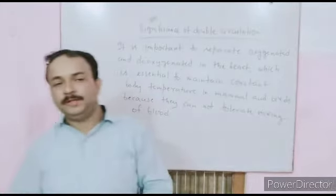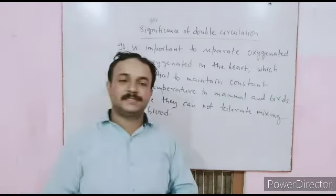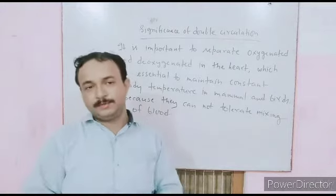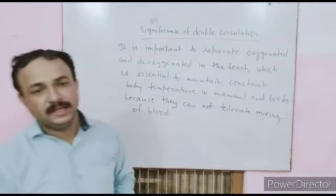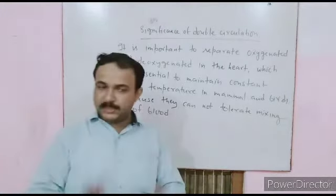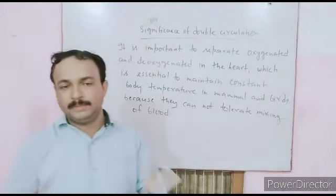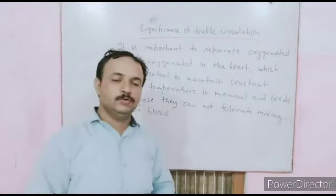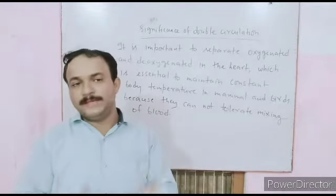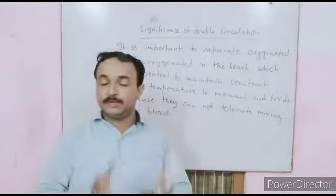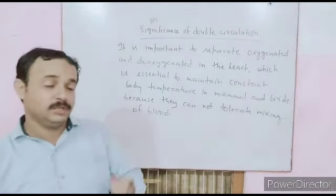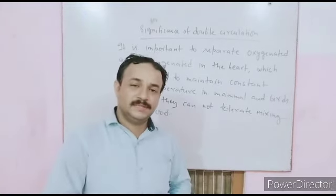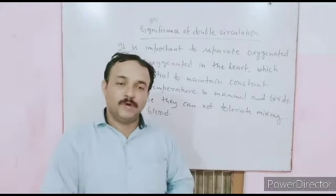In double circulation there is no mixing of oxygenated and deoxygenated blood, which is essential for keeping pure and impure blood separate. If the blood is mixed, constant body temperature cannot be maintained. Humans, mammals, and birds maintain constant body temperature — this is why they are called warm-blooded animals.